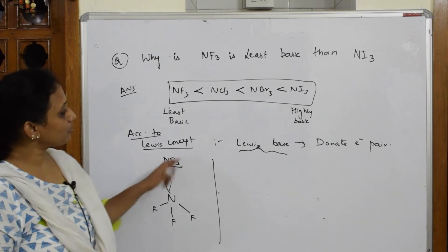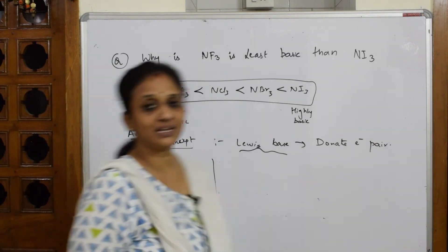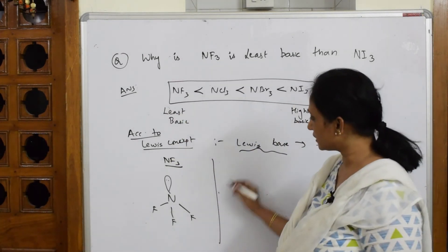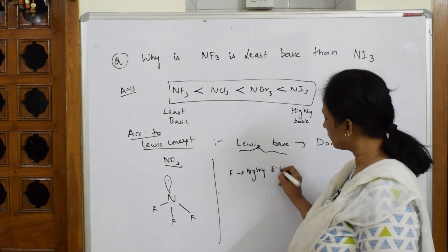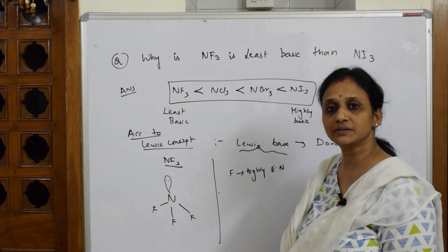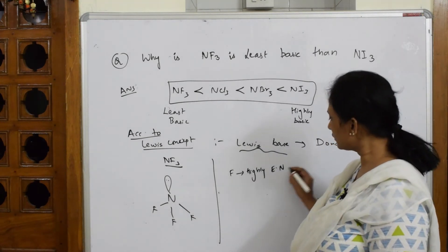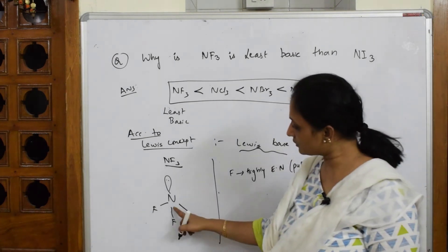This nitrogen would have donated this lone pair easily and it would have become a strong base, but what is happening here? Fluorine is the main culprit. This fluorine being highly electronegative, what does this do? This is going to drag the electron density towards it. And when it is highly electronegative, we will write that also, it pulls electrons.